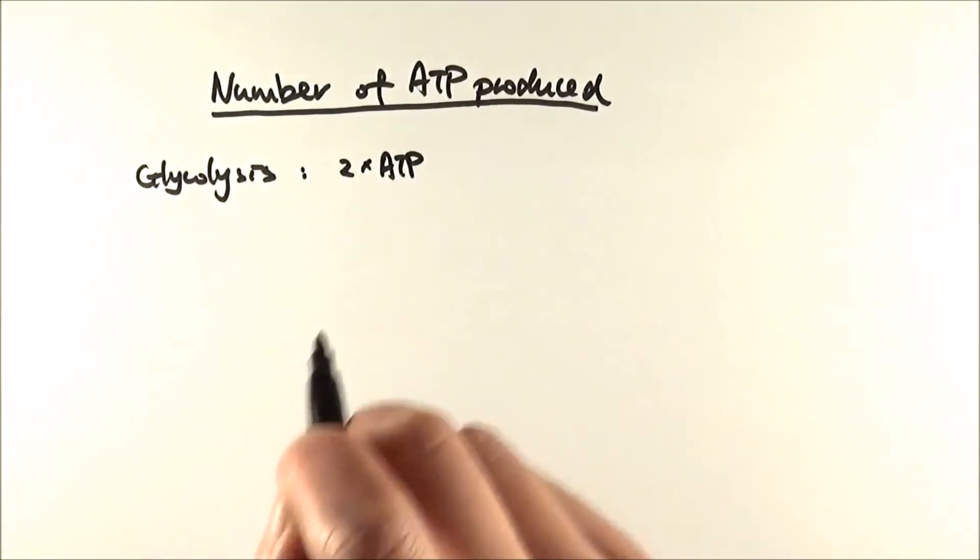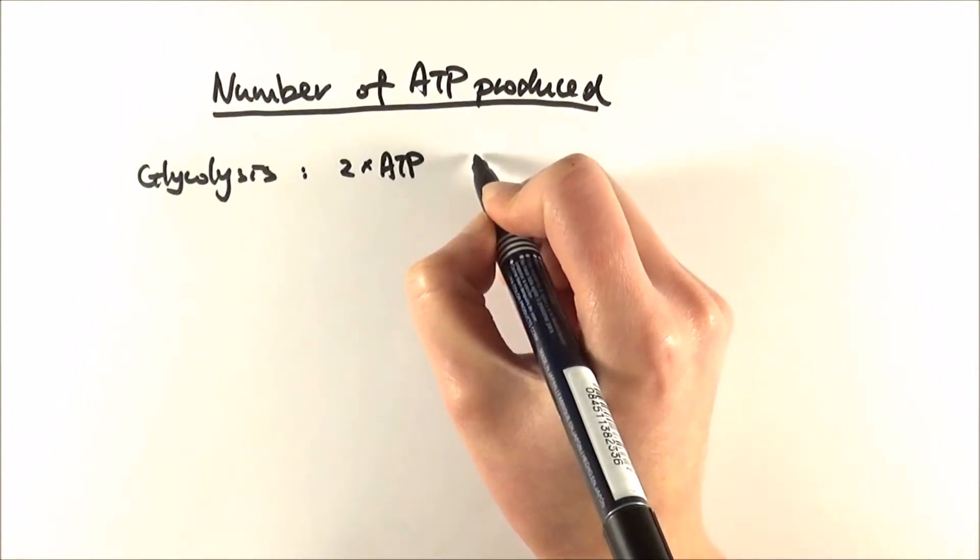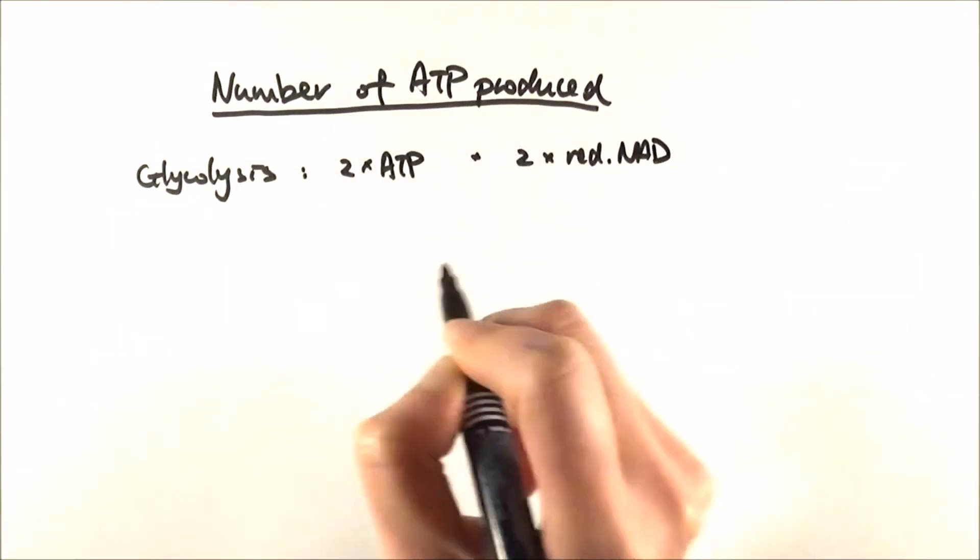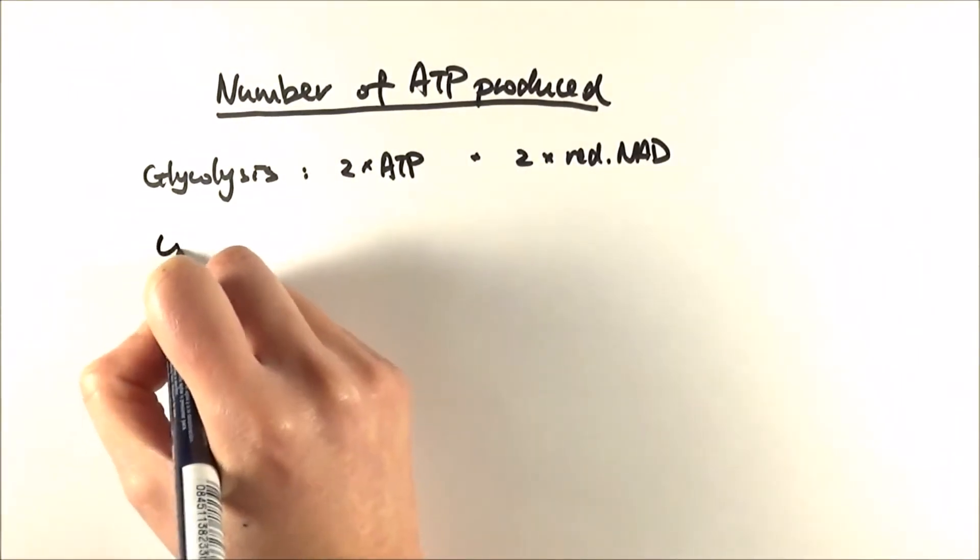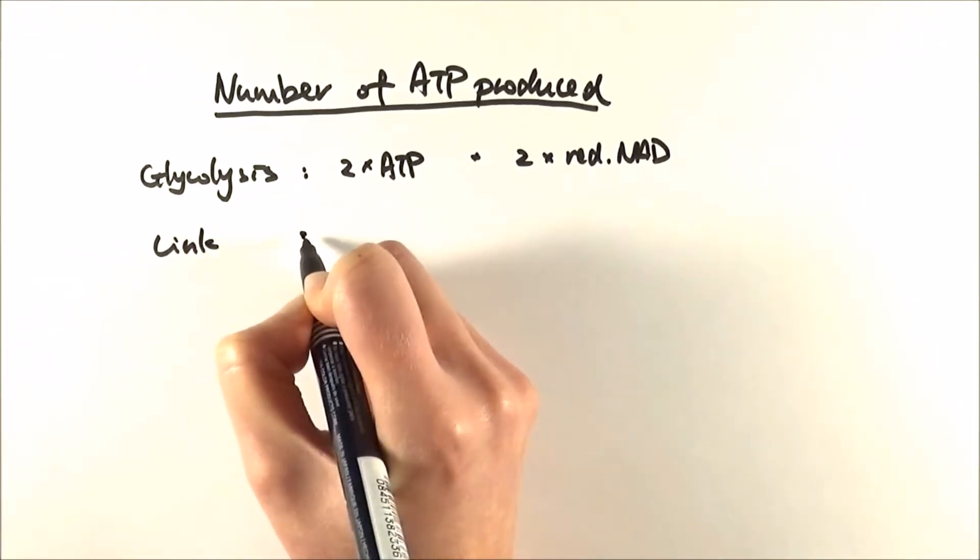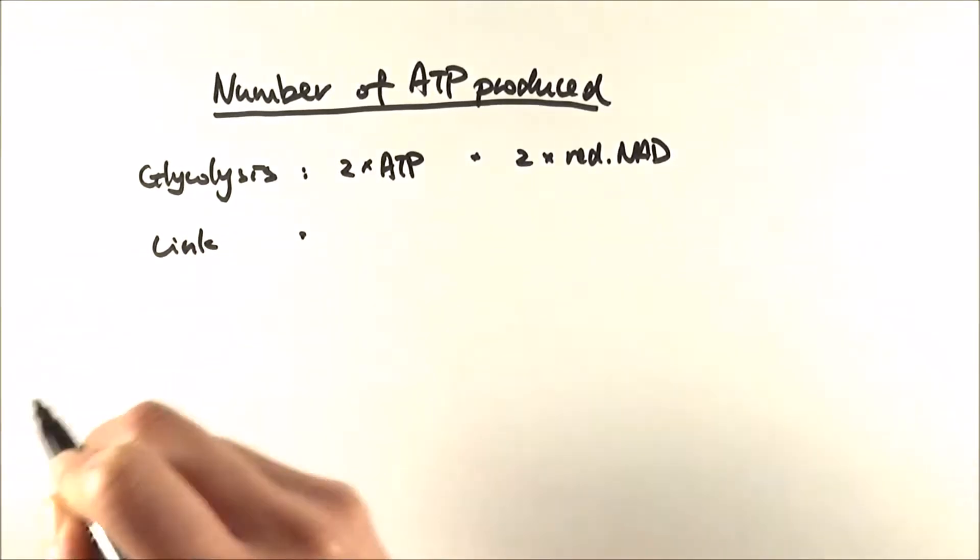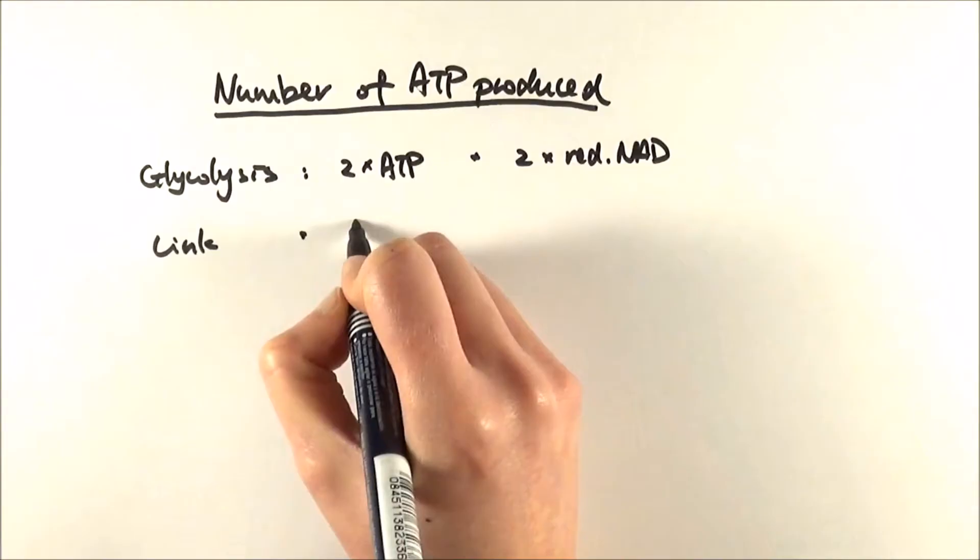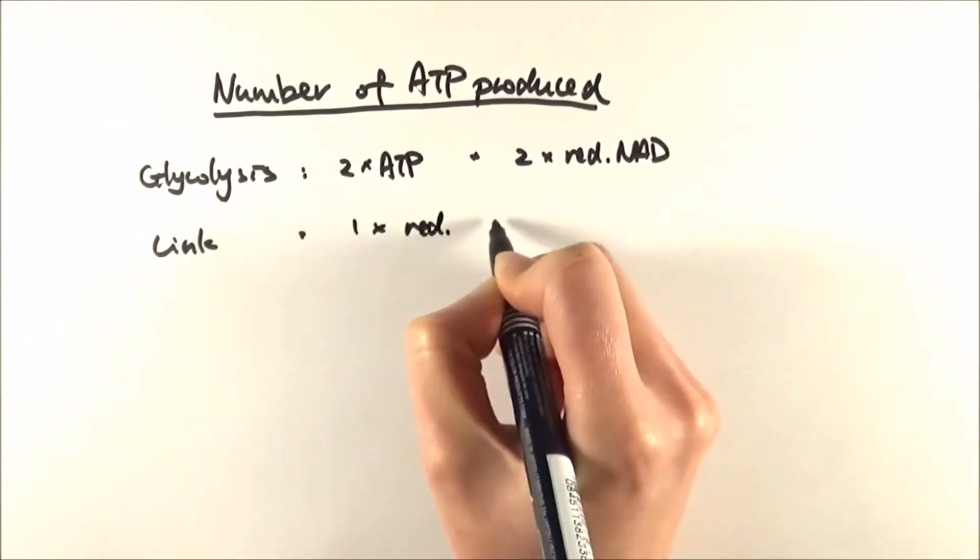Now, apart from the 2 ATP, we also made 2 reduced NAD, and we'll come back to that later on. The next stage is link reaction, in which we made 1 carbon dioxide, which is released and breathed out. So we also made 1 reduced NAD there.